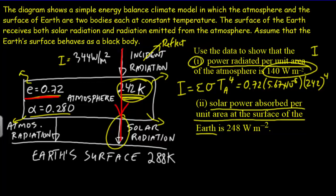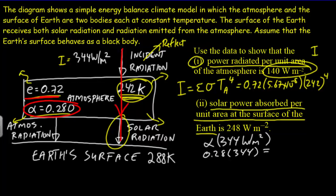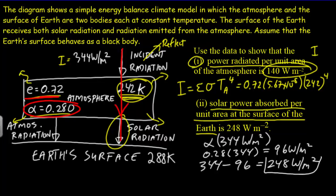The only thing we need to account for is the fraction that reflects, given by the albedo. The fraction reflected from the atmosphere is albedo × 344 W/m²: 0.28 × 344 = 96 watts per meter squared reflected. The remaining radiation that passed straight through is 344 − 96 = 248 watts per meter squared, so this value at the surface is 248 W/m².